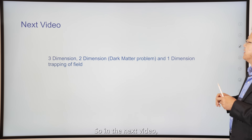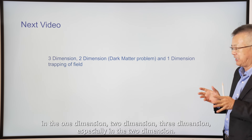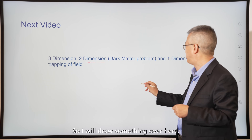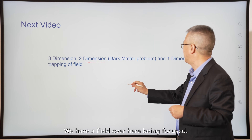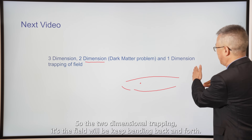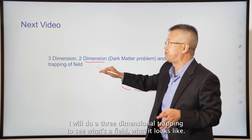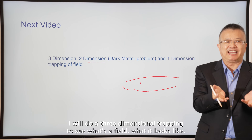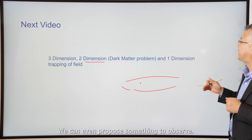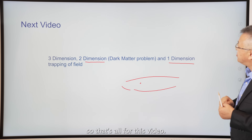In the next video we're going to talk about the field being trapped in one, two, and three dimensions - especially in two dimensions. The two-dimensional trapping means the field keeps bending back and forth, trapped in two dimensions. From three-dimensional trapping we can explore what a field looks like. In two dimensions we can derive the dark matter problem and propose something to address it. We also have one-dimensional trapping in space-time. That's all for this video, thank you.